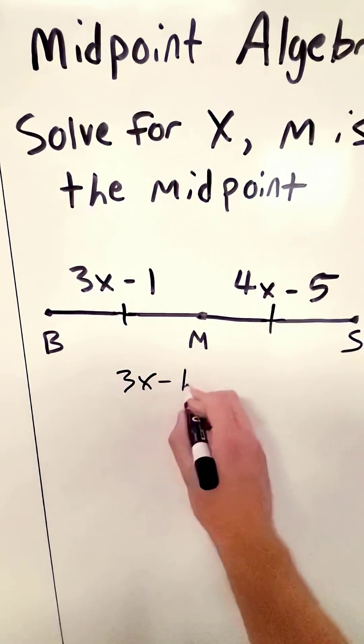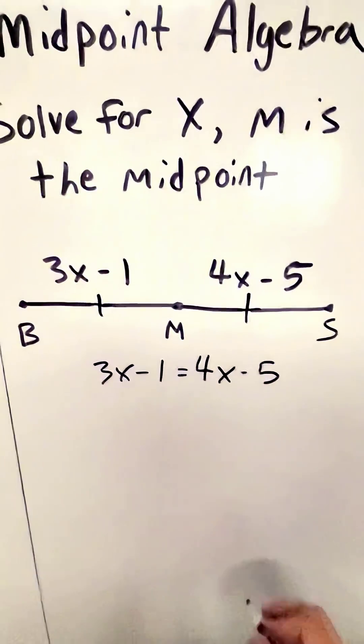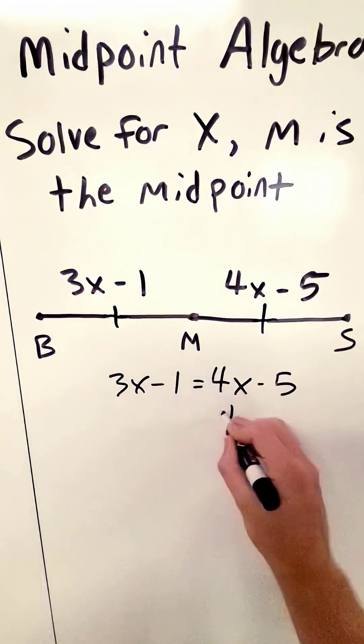So we have 3x minus 1 is equal to 4x minus 5, and we can solve that equation just by adding 5 to both sides.